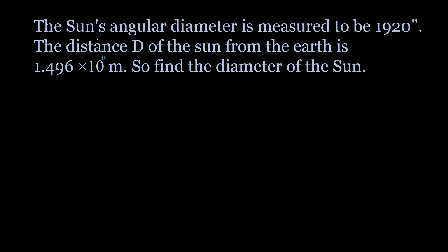First question: the sun's angular diameter is measured to be 1920 seconds. The double line indicates seconds. The distance of the sun from the earth is given. Find the diameter of the sun. There are two objects given — the sun and the earth — and we try to understand the sun's angular diameter.